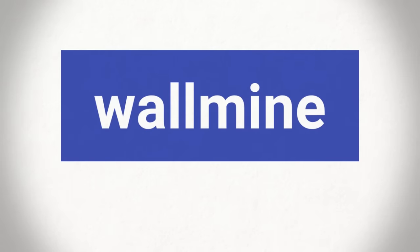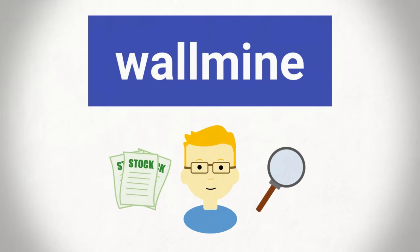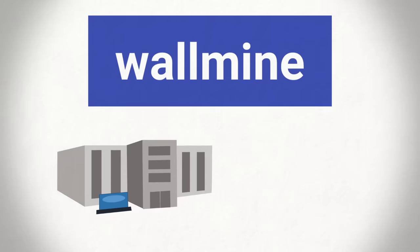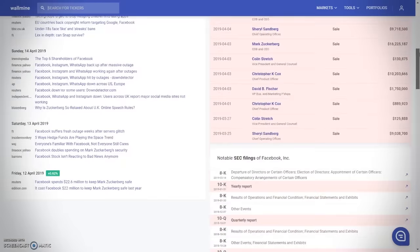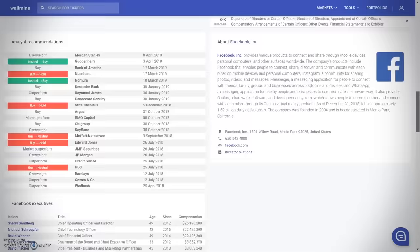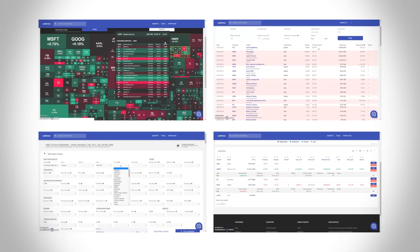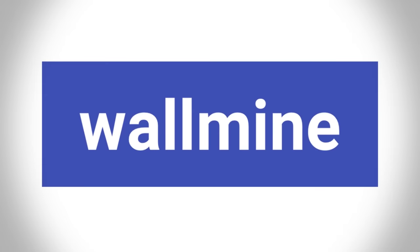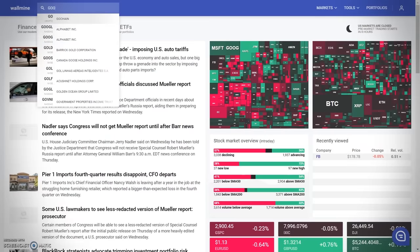This video is sponsored by Wallmine. If you're someone who researches your own investment ideas, or if you like to monitor how your personal investments are doing, Wallmine is a great tool for retail and professional investors alike that makes researching companies and keeping a pulse on the markets easy. It's got a pretty intuitive and user-friendly interface and a lot of handy tools, including a heat map, insider trading information, a stock screener, and even a portfolio tracking tool that you can use for your personal holdings. Probably the biggest difference between this site and other pages like Yahoo Finance and Morningstar, though, is its simplicity.